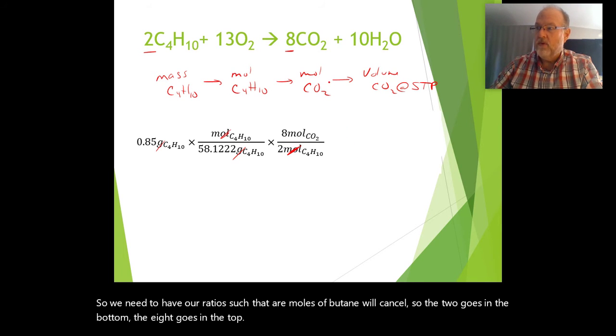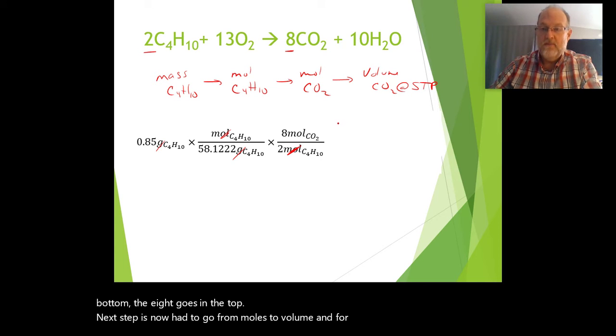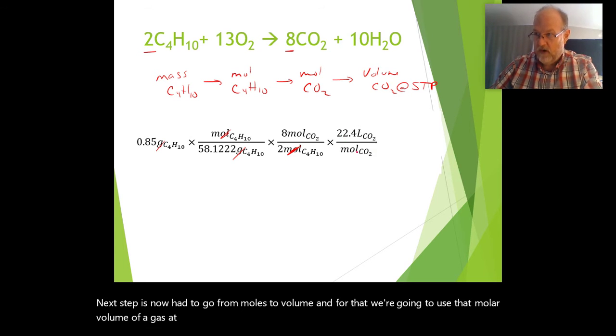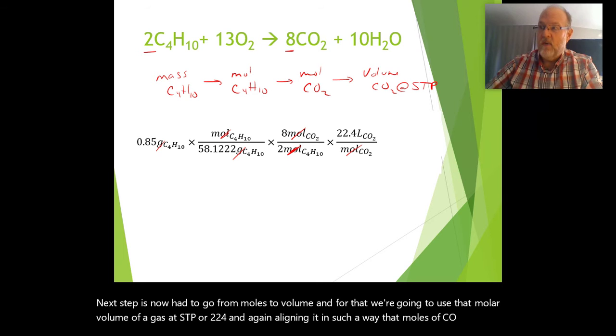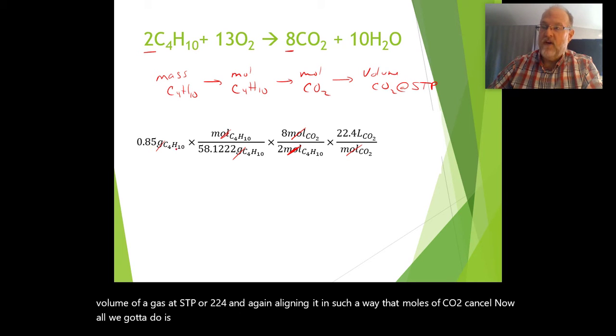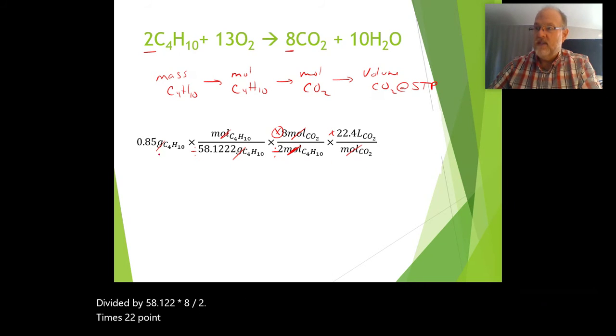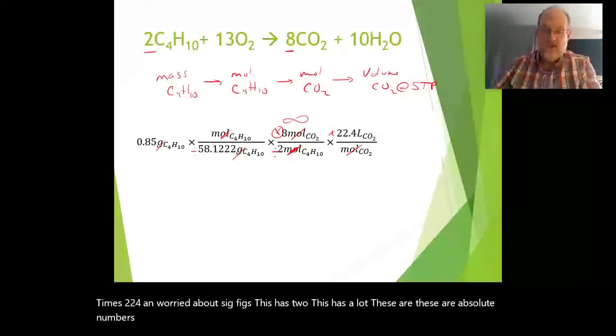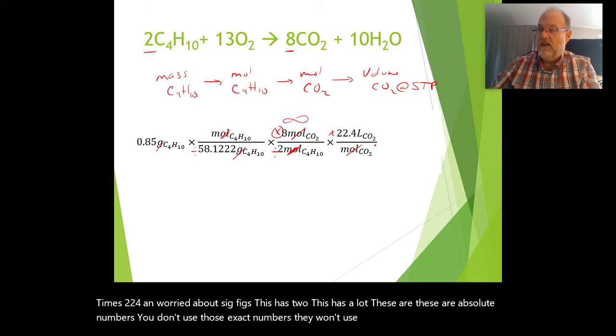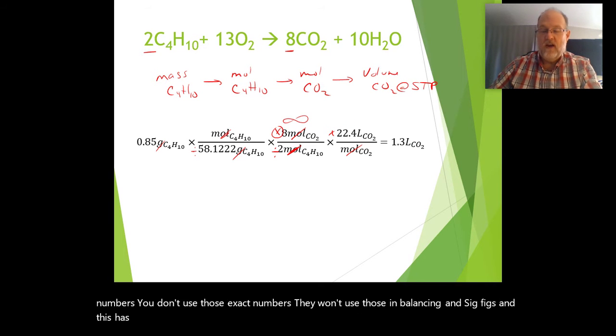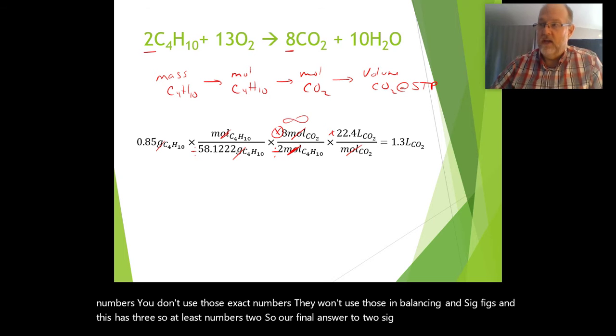Next step is now we have to go from moles to volume, and for that we're going to use that molar volume of a gas at STP or 22.4, aligning it in such a way that moles of CO2 cancel. Now all we've got to do is the math: 0.85 divided by 58.122 times 8 divided by 2 times 22.4. Worry about sig figs. This has 2, these are absolute numbers, and this has 3. So the least number is 2. Our final answer to 2 sig figs is 1.3 liters of CO2.